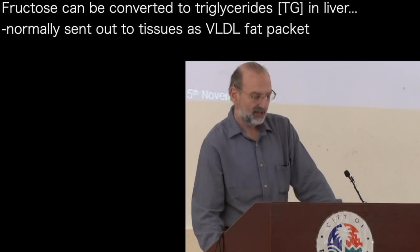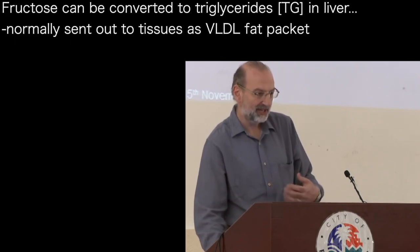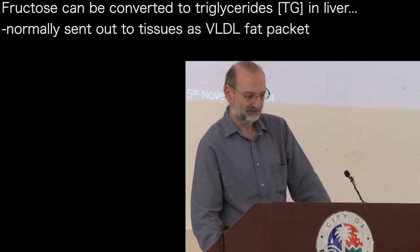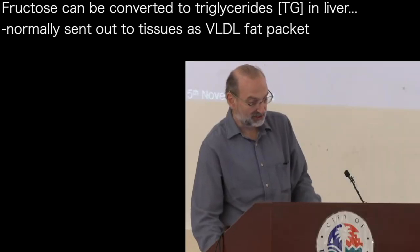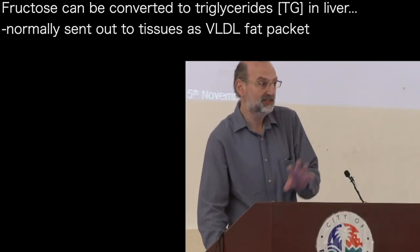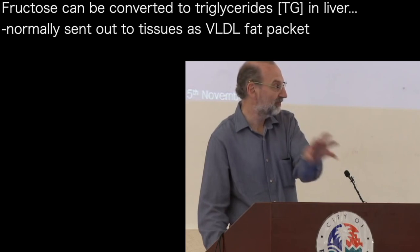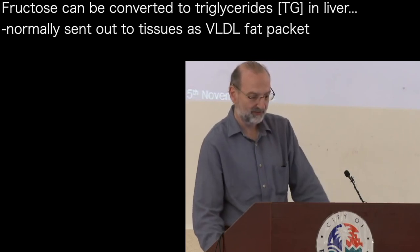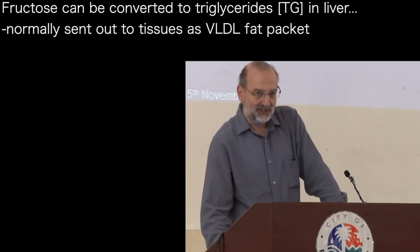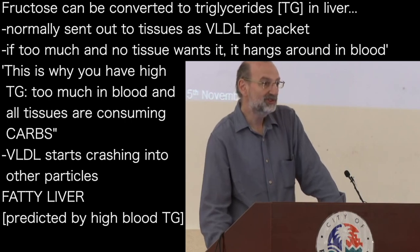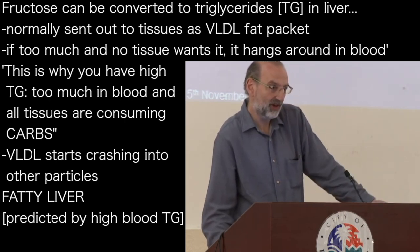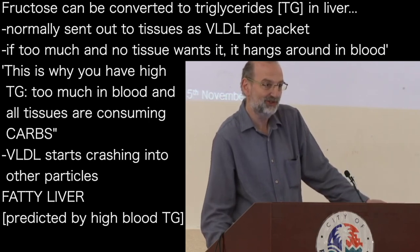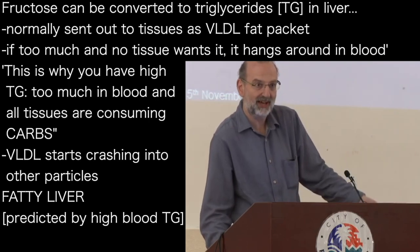Let's think in a bit more detail about how these particles interact with each other, because that's important. Fructose can be converted to triglycerides in the liver, and normally you export that as VLDL particles — a packet of fat that goes out to the tissue. If you make too much VLDL and nobody wants to use the fat, they just hang around in the blood. That's why you have high triglycerides — because the body doesn't want to use them; it's too busy using carbs.